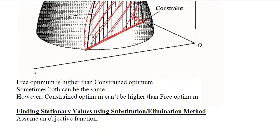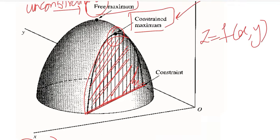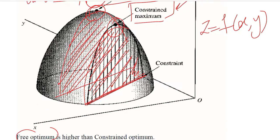So diagrammatically we have also understood it, and we have free optimum which is higher than the constrained optimum because it is having no constraints. Sometimes both can be the same, and that can be possible if the constraint is lying here, then it will slice the dome here and this will give us the same level of the free maximum as well as the constrained maximum.